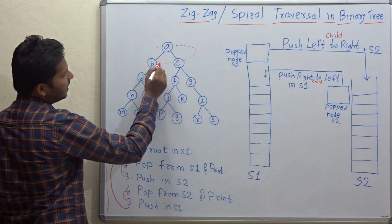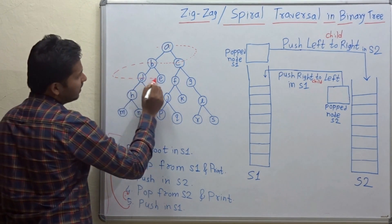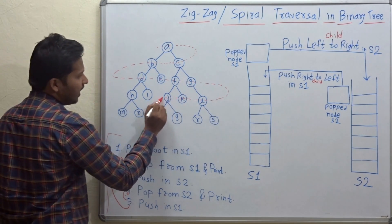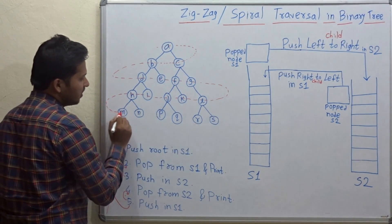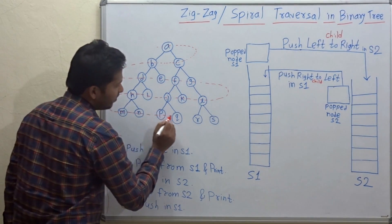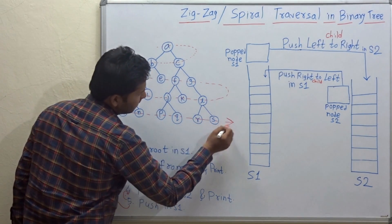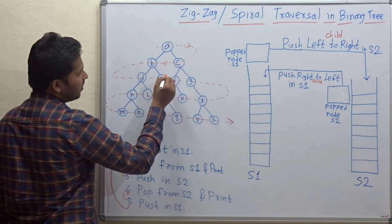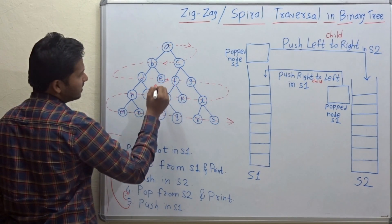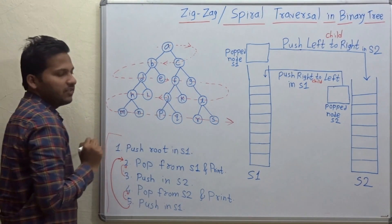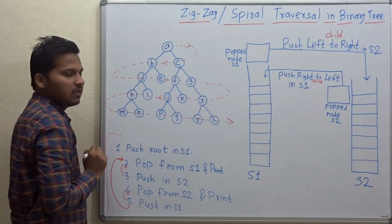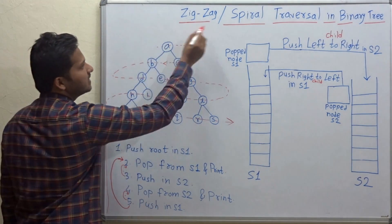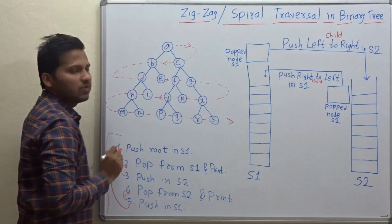So the spiral level order traversal goes: A, then C, B, then D, E, F, G, then L, K, J, I, H and M, N, P, Q, R, S. This is the spiral level order traversal of the binary tree. Because it is zigzag, it is also called as zigzag traversal.